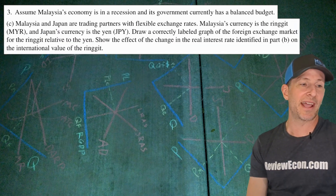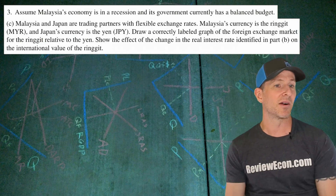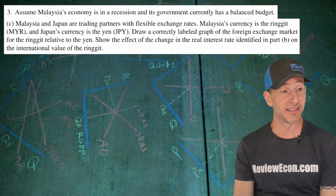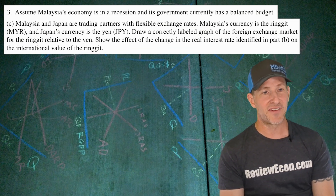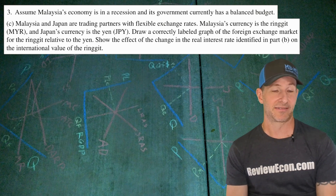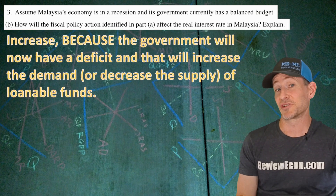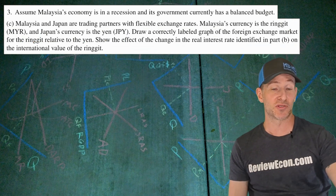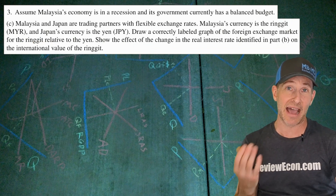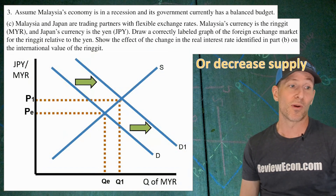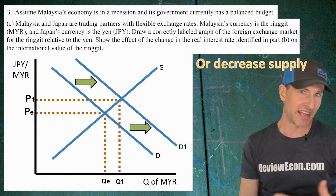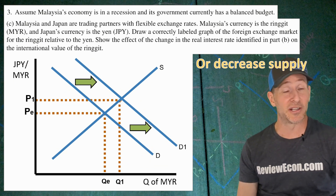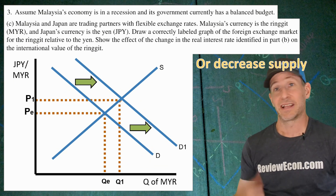For part C, Malaysia and Japan are trading partners with flexible exchange rates. Malaysia's currency is the ringgit and Japan's is the yen. We draw a correctly labeled graph of the foreign exchange market for the ringgit relative to the yen, showing the effect of the change in real interest rate from part B. Remember the interest rate increased, so money wants to flow toward that higher interest rate so foreign investors can earn it. To invest where the high interest rate is, you need that currency — so we'll see an increase in demand for the ringgit (MYR), which increases the exchange rate. A decrease in supply would also be accepted.